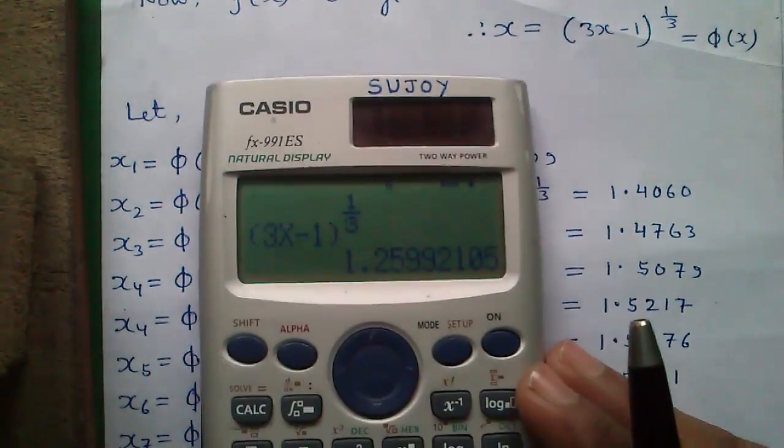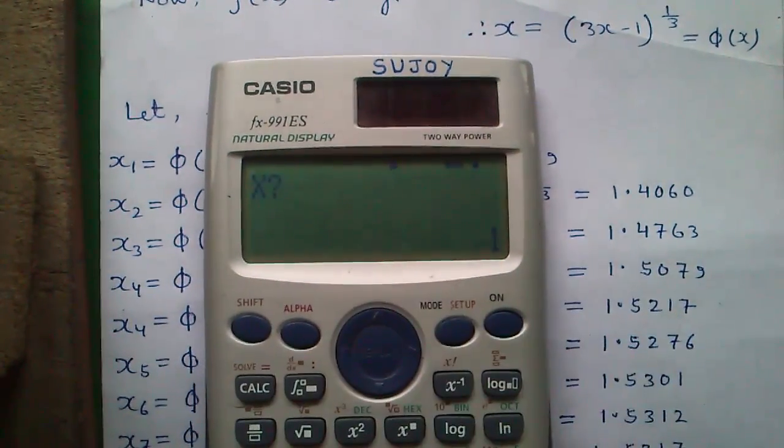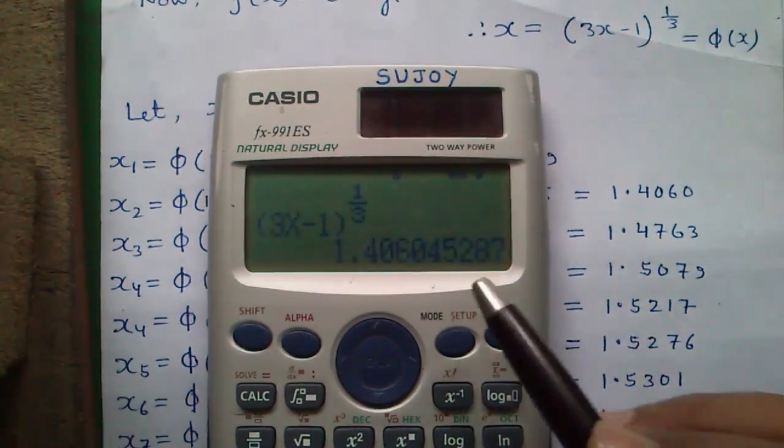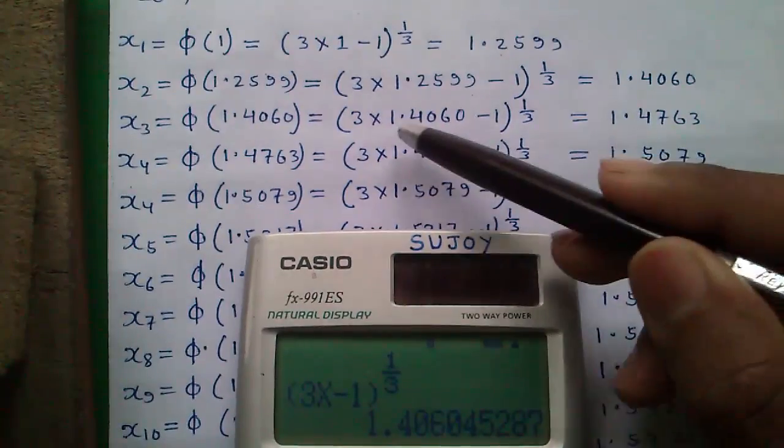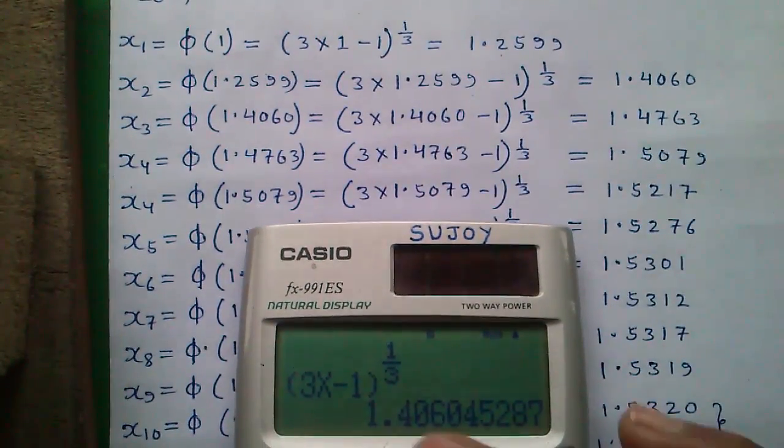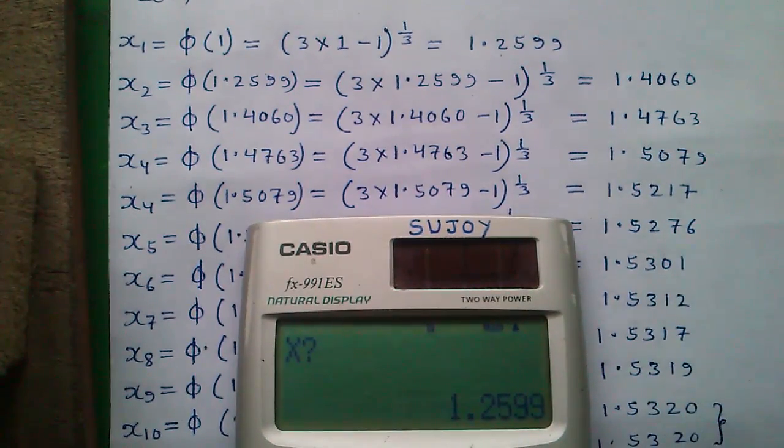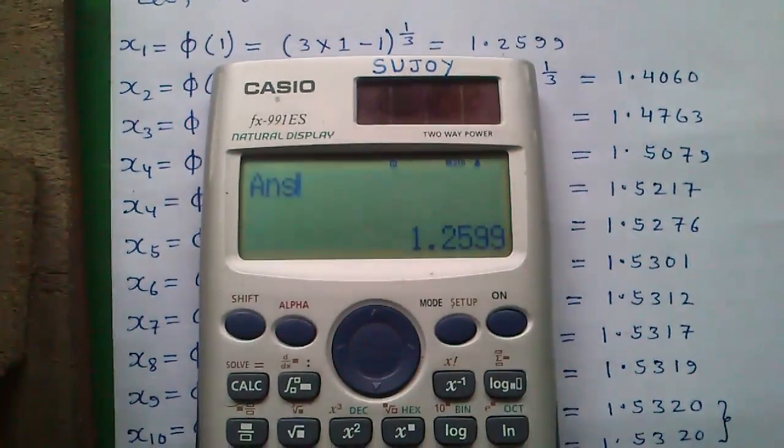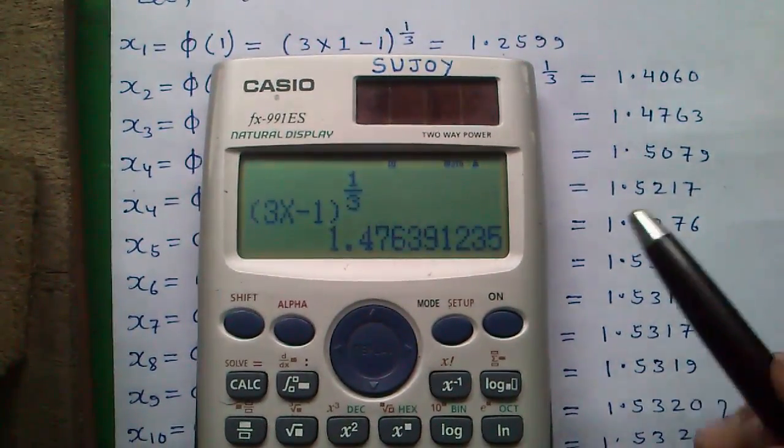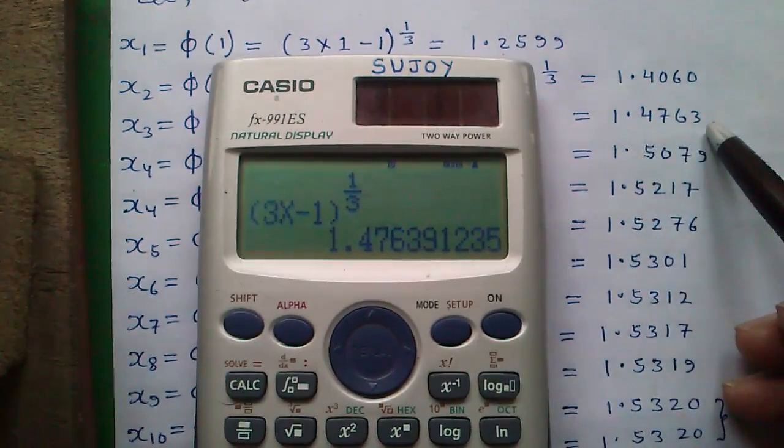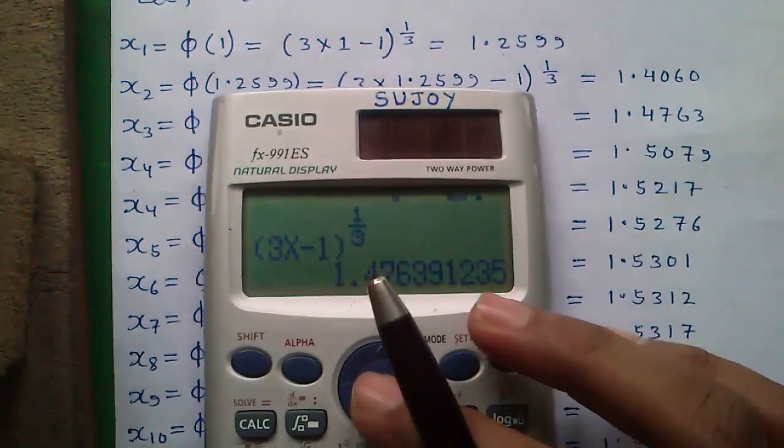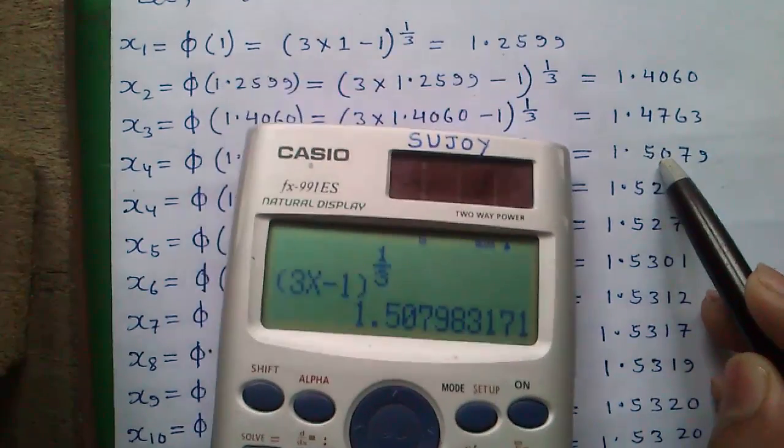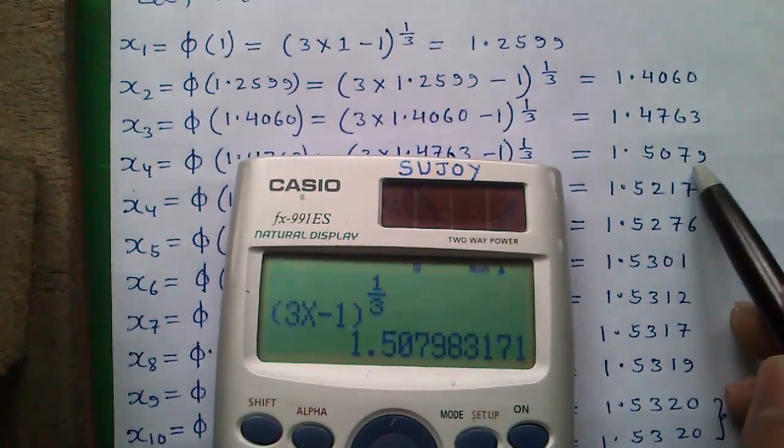For the second iteration, just press CALC, x is now 1.2599, and press equals to. You will get 1.4060. For the third iteration, press CALC, and instead of typing the value you can just press the answer button and press equals to, which will give you 1.4763. For the fourth iteration, again press CALC, press answer and equals to, which will give you 1.5079.